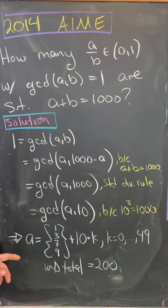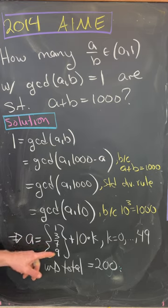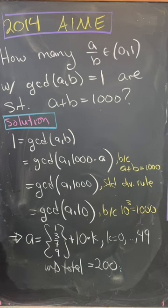Then that only leaves you some possibilities for A. It can be 1, 3, 7, 9 plus some multiple of 10. Counting it all up, you get 200 total possibilities.